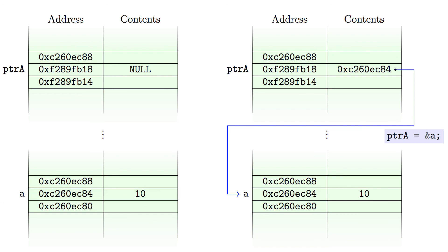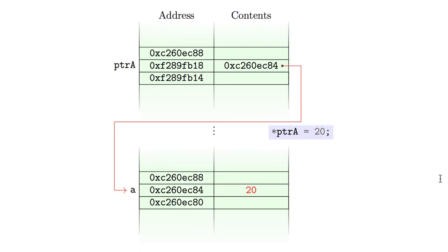Making a pointer point to A means that the contents are actually the memory address of A. Implicitly it points to that variable and its contents. By dereferencing and resetting the value, we are going from the pointer, jumping to that memory address, and then resetting its contents.